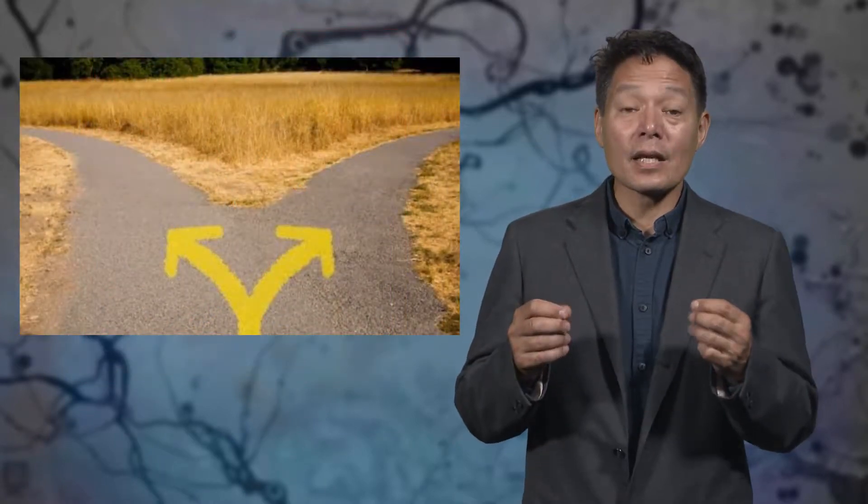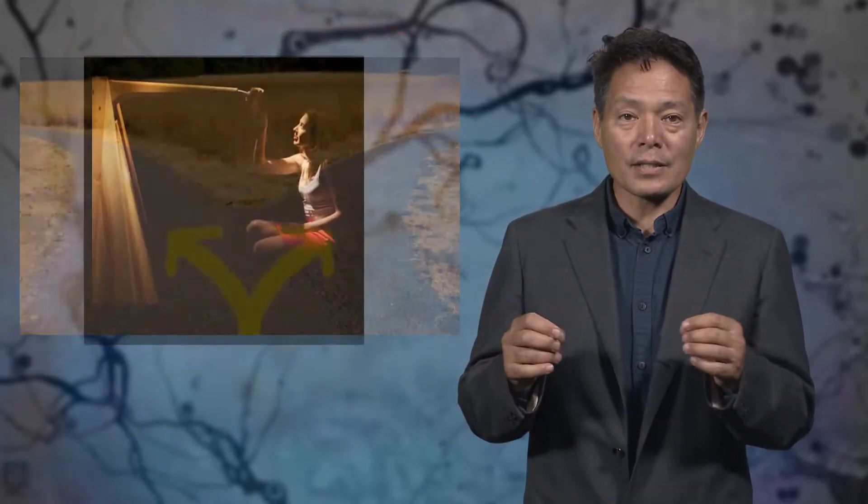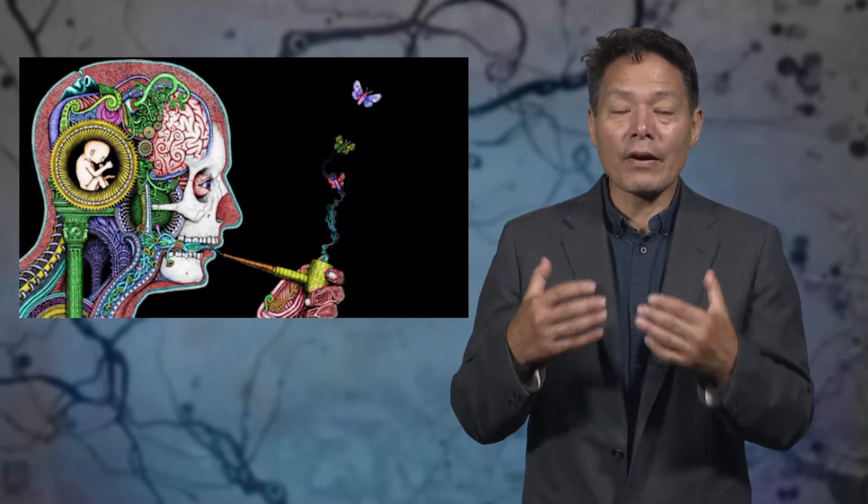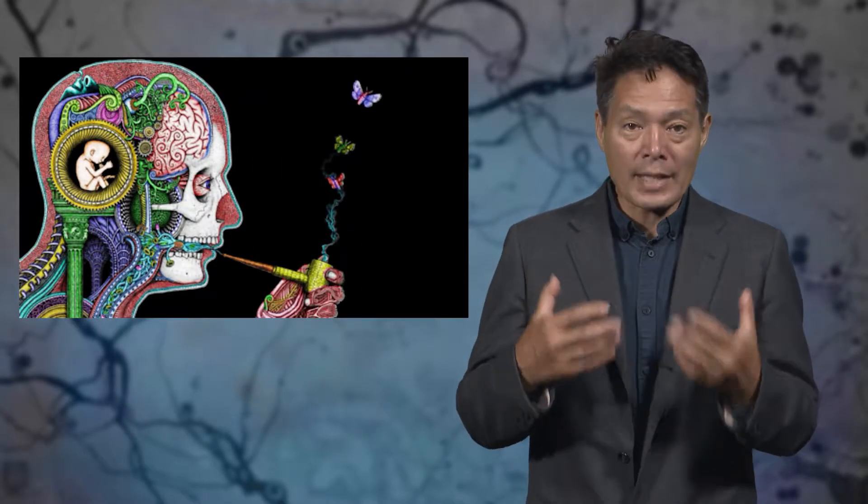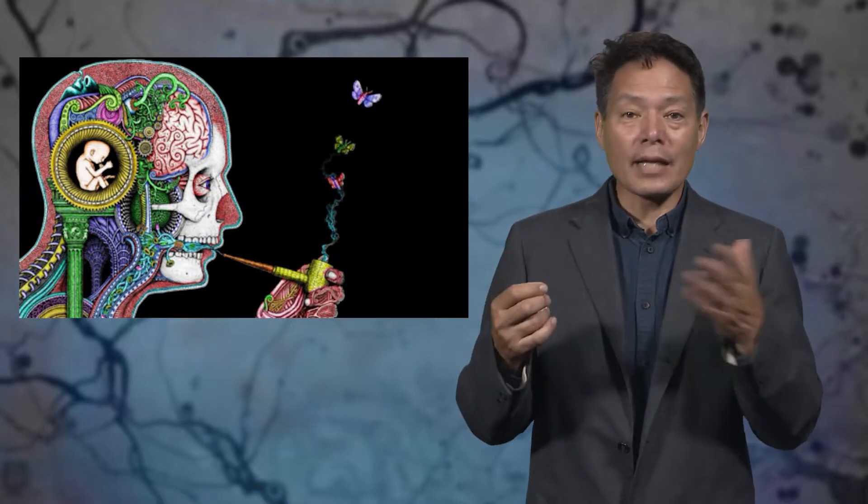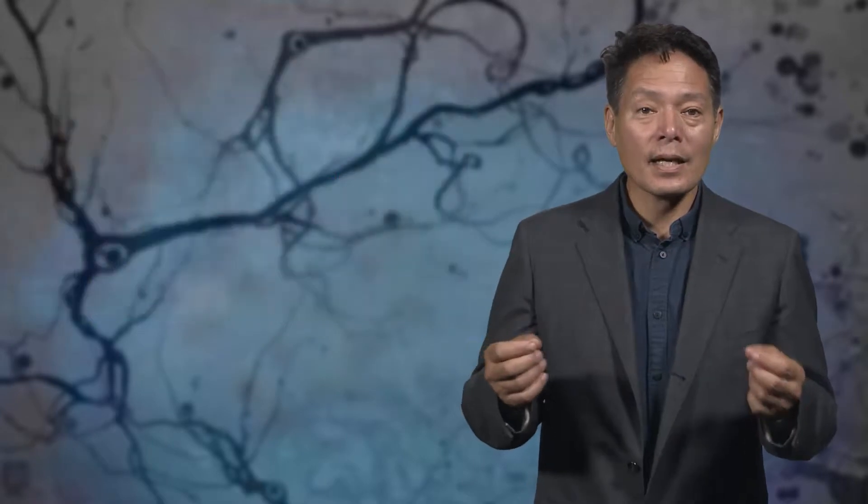First, note that consciousness is bifurcated. We're conscious of the outside world in the form of perception, and we're conscious of our various internal simulations or imaginings, including dreaming, daydreaming, and hallucinations. Perception might be thought of as a kind of hallucination as well, but one that is constrained to be about what is most likely really happening in the outside world.